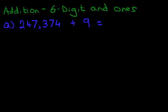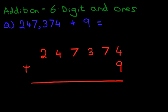So let's write this nice and neat below here: 247,374 plus 9. Now I've deliberately written this very large so that we can see what's going on.